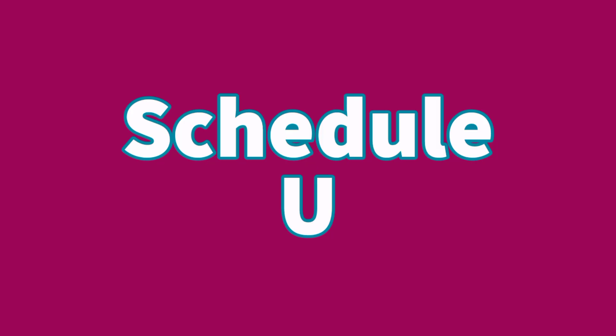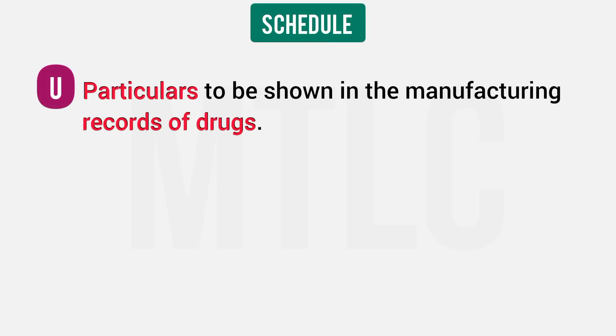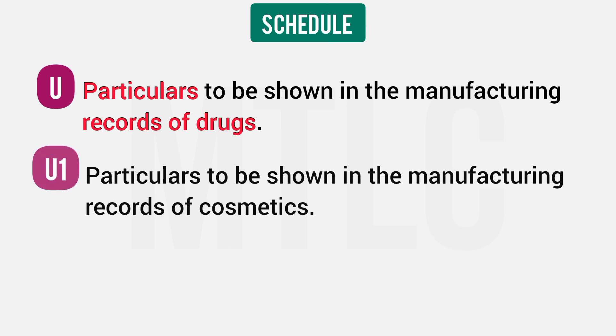Schedule U covers manufacturing records of drugs. If you maintain a book of manufacturing records of drugs, that falls under Schedule U. Schedule U1 is a related sub-schedule.